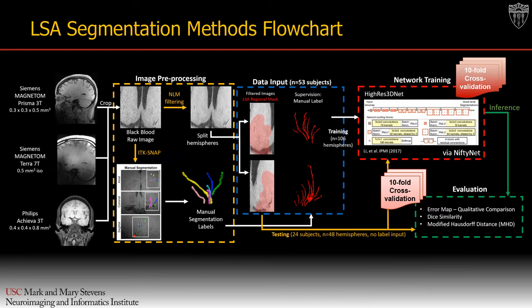To prepare for input into the segmentation model, the raw images underwent several preprocessing steps. First, the images were normalized to the mean signal intensity of the Siemens 3T data, then denoised via non-local means filtering. The filtered images were cropped to a volume encompassing the LSAs and separated by left and right hemispheres to avoid the ventricular structures, for a total of 154 image volumes.